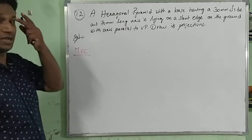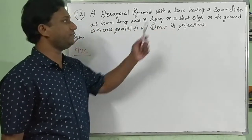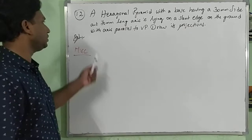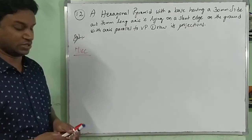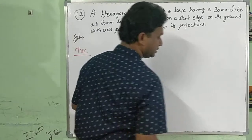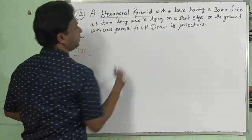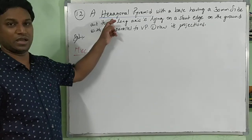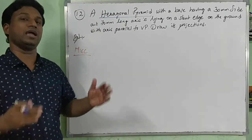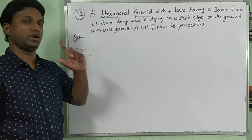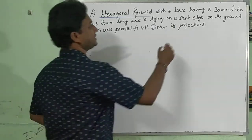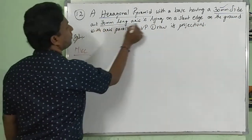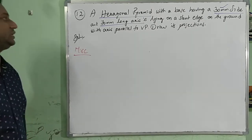Look at the next problem in exercise number 1: a pentagonal pyramid with a base having 30mm side and 70mm long axis, is lying on a slant edge on the ground with axis parallel to VP. Draw its projections. The base shape is hexagonal — each side is 30mm, and the axis height is 70mm.